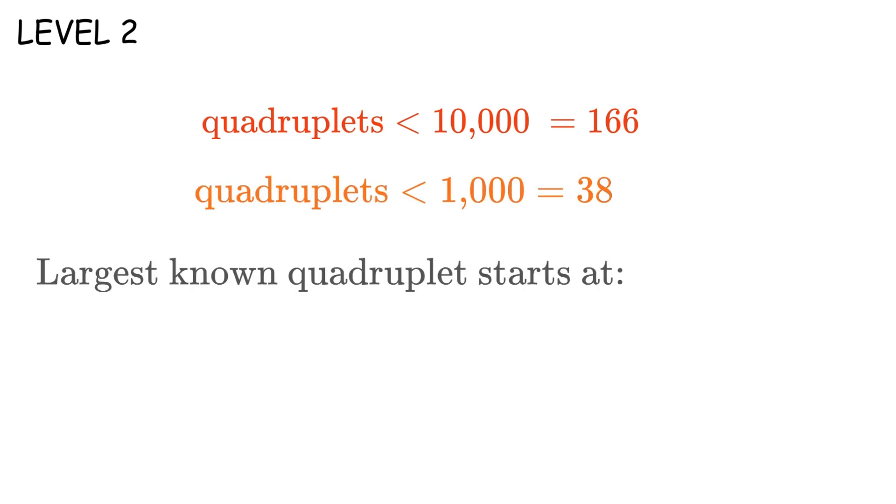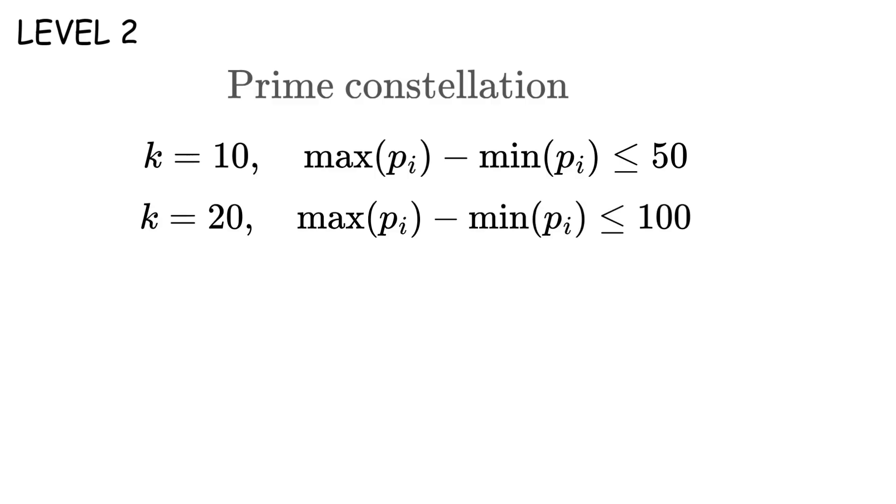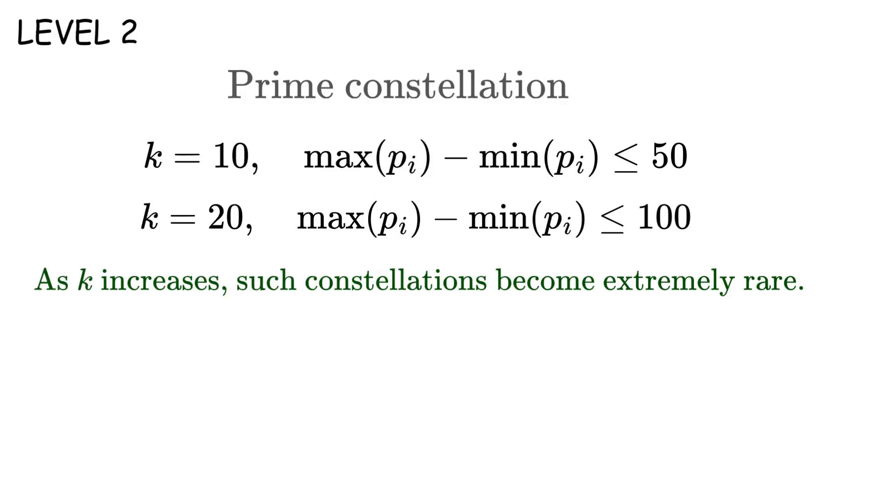The largest known prime quadruplet. That's over a quintillion. Unbelievably rare as numbers get larger. Now imagine looking for a prime constellation with 10 primes all within 50 of each other. Or 20 primes within 100. The bigger the constellation, the rarer they become. It's ridiculous how sparse they get. Some mathematicians believe certain patterns might stop appearing entirely after a certain point. But we don't know for sure.